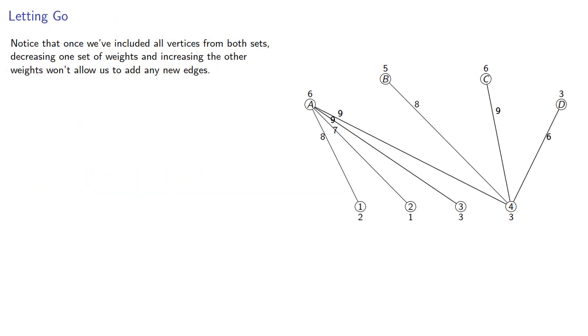And so notice that once we've included all vertices from both sets, decreasing one set of weights and increasing the other weights won't allow us to add any new edges. So it's possible that we will never be able to produce a perfect matching.